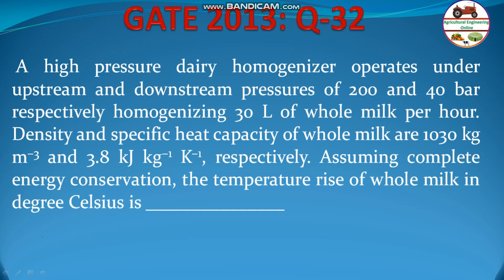A high-pressure dairy homogenizer operates under upstream and downstream pressures of 200 bar and 40 bar respectively, homogenizing 30 liters of whole milk per hour. Density and specific heat capacity of whole milk are 1030 kg per cubic meter and 3.8 kJ per kg per Kelvin respectively. Assuming complete energy conservation, the temperature rise of whole milk in degree Celsius is to be found.